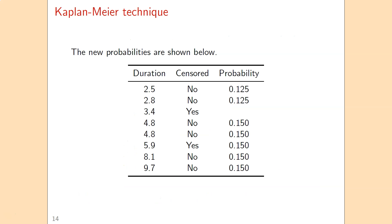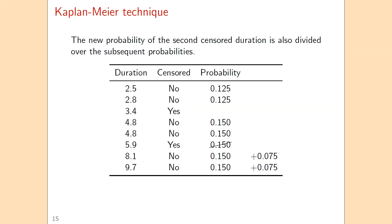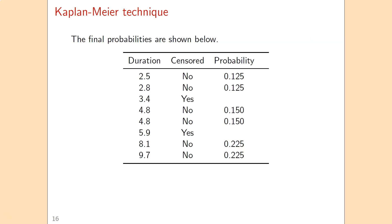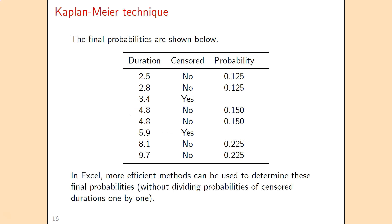The interpretation is: since the duration of 3.4 is censored, the real time until failure is longer, and we assume it is equally likely to be any of the five longer durations. We then do the same for the second censored duration of 5.9, spreading its probability of 0.15 over the two remaining longer durations. This gives us the final list of Kaplan-Meier probabilities. The censored durations end up with probability 0, so they can be left out. Two durations with equal length can be combined into one with probability 0.3.